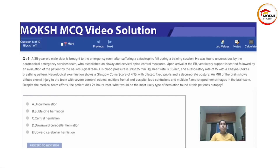A 35-year-old male skier is brought to the emergency room after suffering a catastrophic fall during a training session. He was found unconscious by the Aeromedical Emergency Services team, who established an airway and cervical spinal control measures. Upon arrival at the ER, ventilatory support is started followed by an evaluation of the patient by the neurosurgical team.